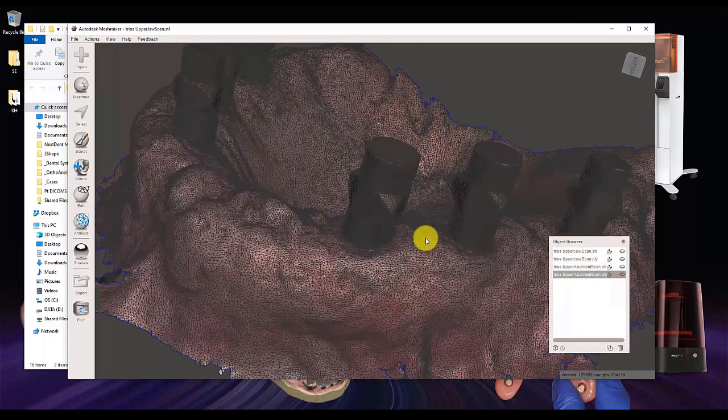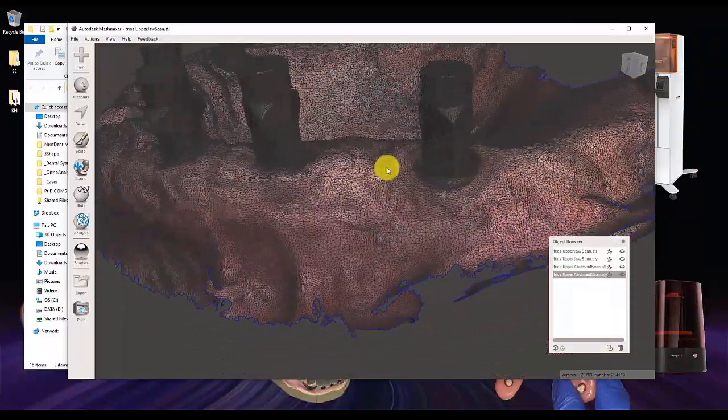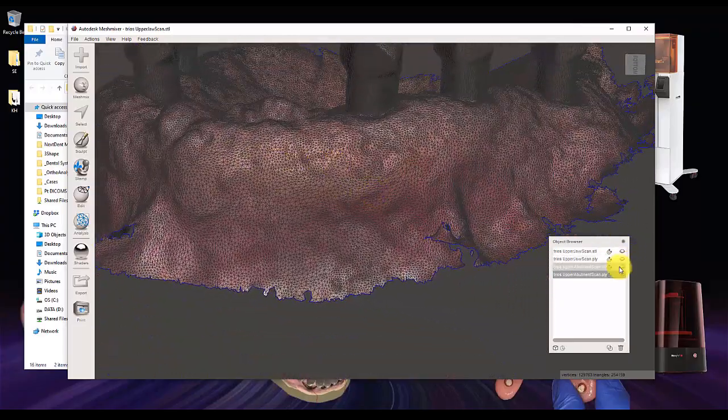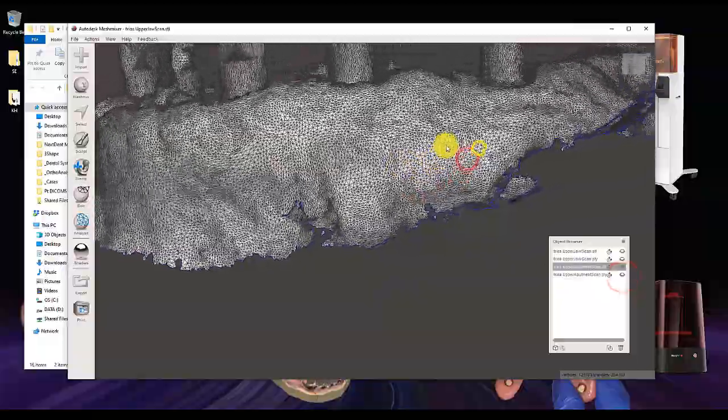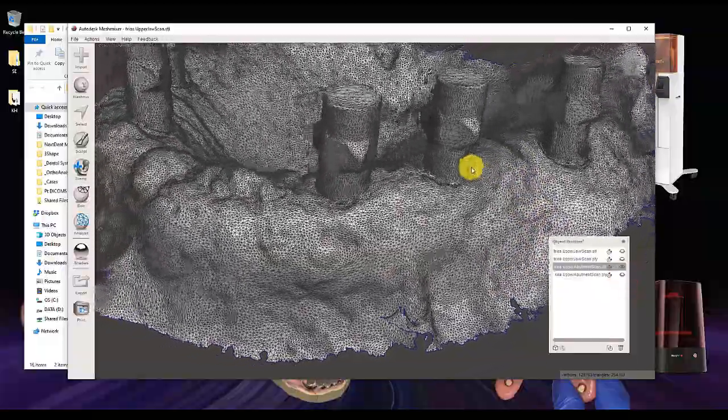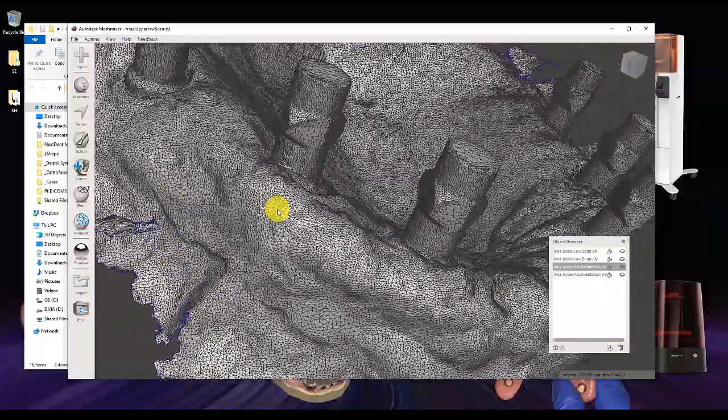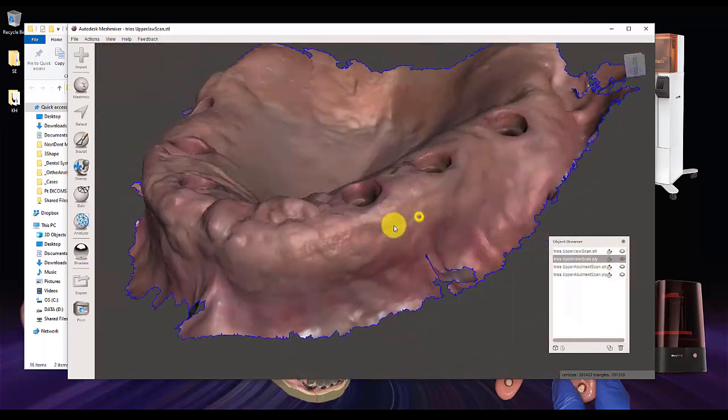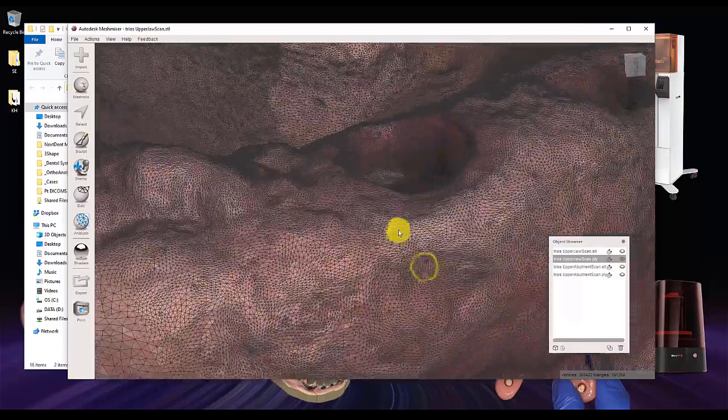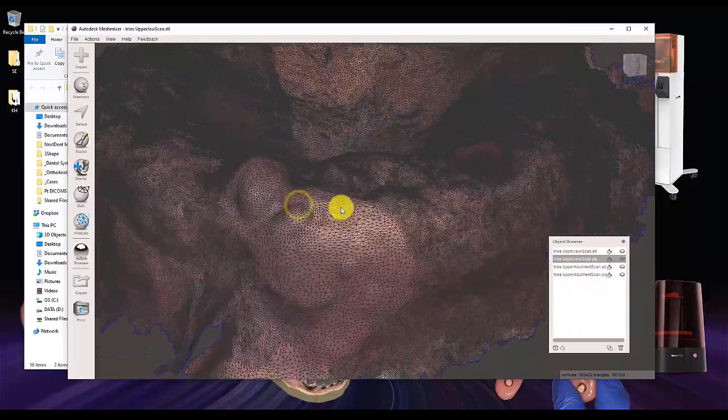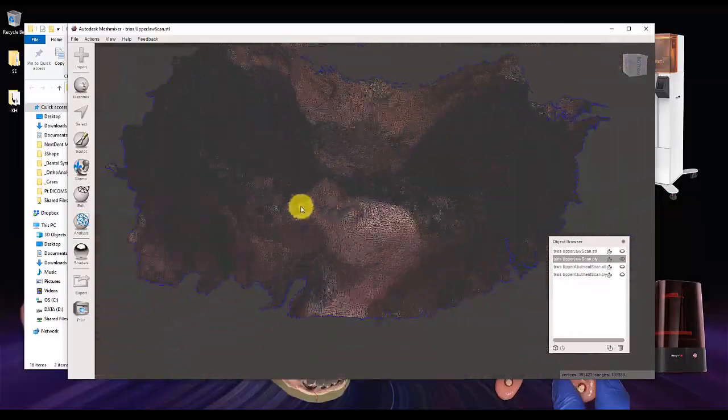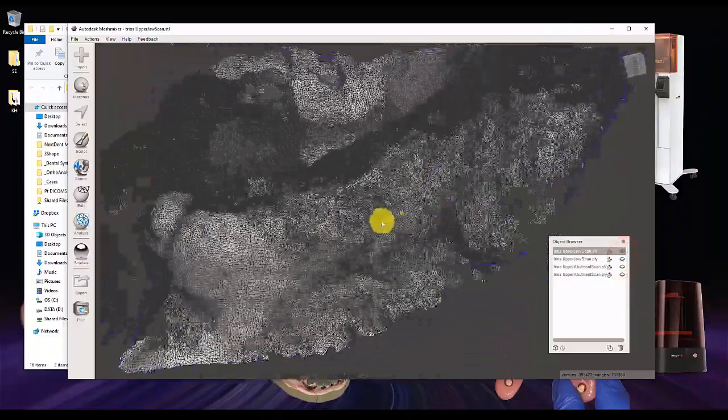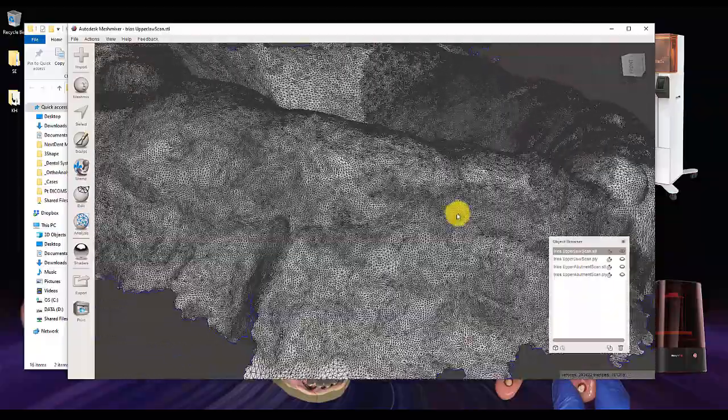So let's go ahead and turn on the wireframe mode here in MeshMixer. You can see here, this is what the mesh density looks like in the PLY file format, and here it is in the STL file format. Let's go ahead and take a look at it in our jaw scan. Here is our jaw scan. So our jaw scan has very, very tight mesh density around where we defined our abutments. And comparing that also with our STL. Identical.